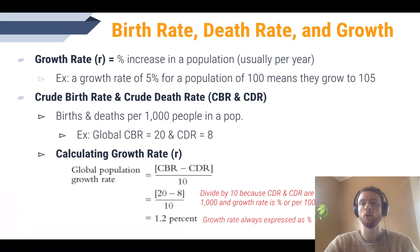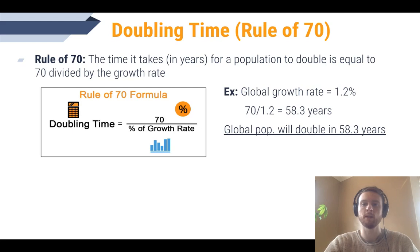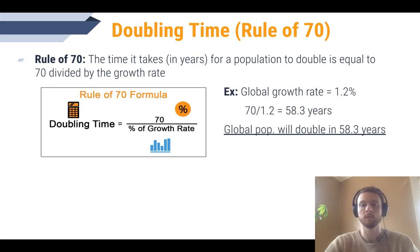Remember, we always express this growth rate as a percentage. We also have a simple formula to estimate the time it will take for a population to double, called the rule of 70. All you need to do is divide 70 by the growth rate of the population. Using the example of a 1.2% global growth rate, we would estimate that Earth's population will double in 58.3 years — all we needed to do was divide 70 by 1.2.